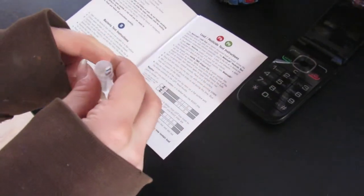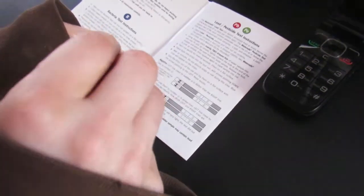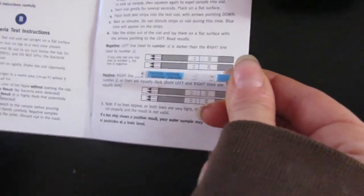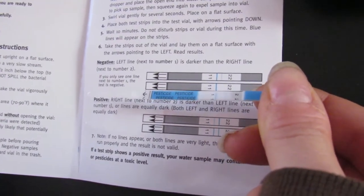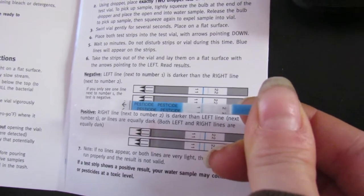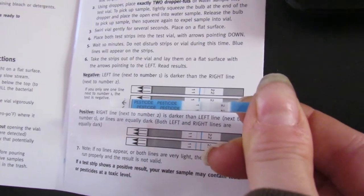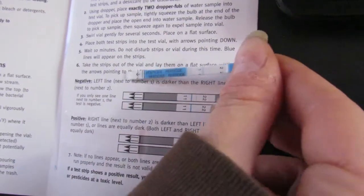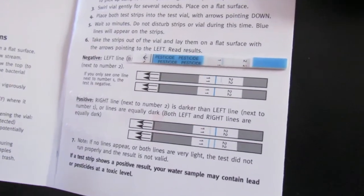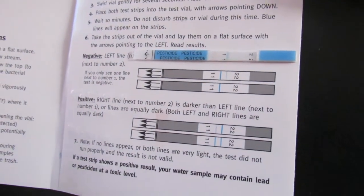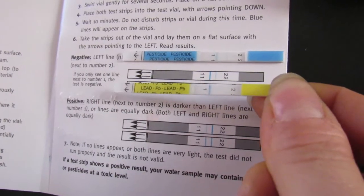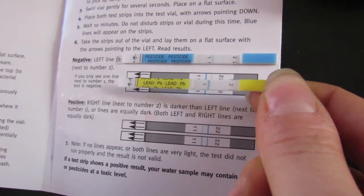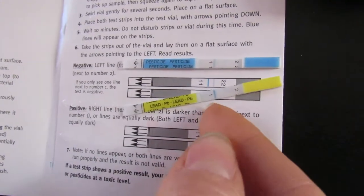The 10 minutes are up for the lead pesticide test. So let's check it out. You take them out. It says if the left line is darker than the right line that you have negative results. Here's our pesticide. Definitely darker on the left. You can see it on the right, but definitely darker on the left. So that would be a negative result. So that's good. We have a lot of golf courses around, so I was a little worried about the pesticides. And the lead. Yep. Darker on the left than on the right. So that's a negative again. So good results so far.